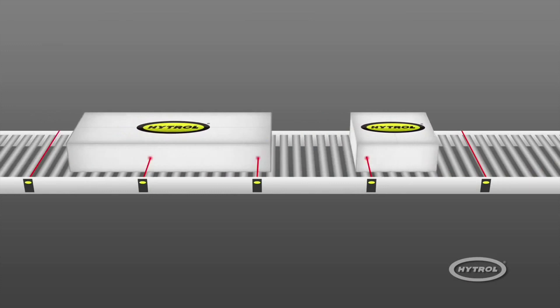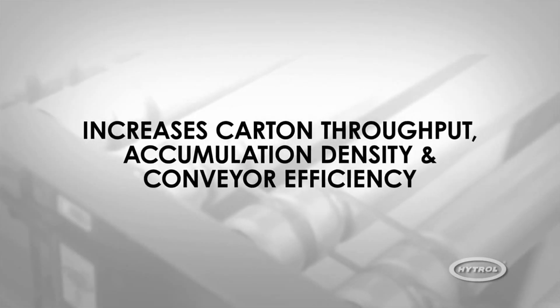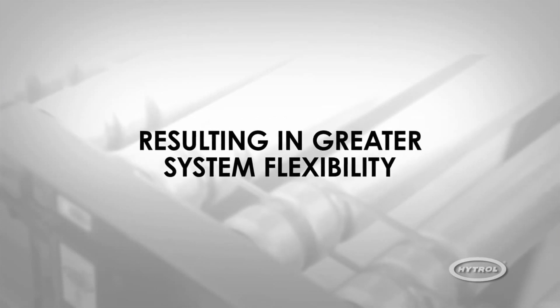By simply assigning longer zone lengths when needed, dynamic zone allocation increases carton throughput, accumulation density, and conveyor efficiency, resulting in greater system flexibility.